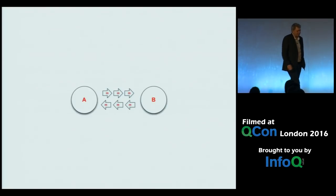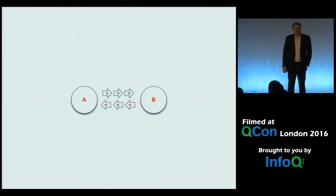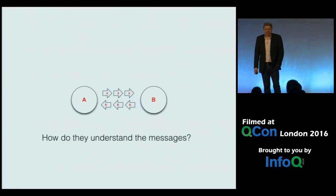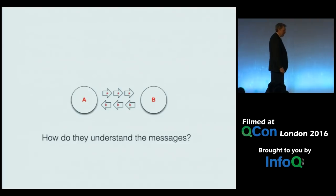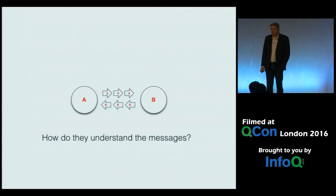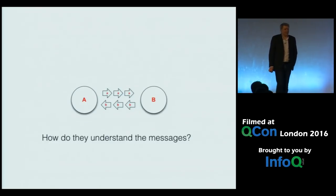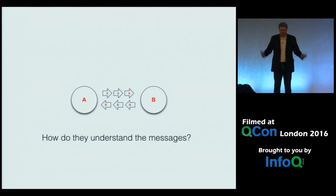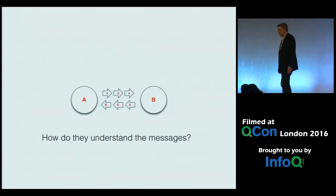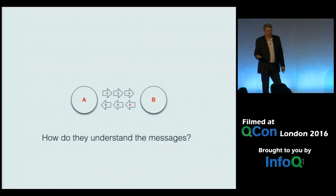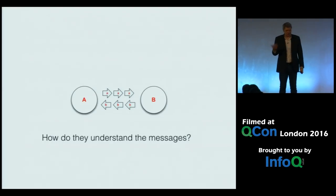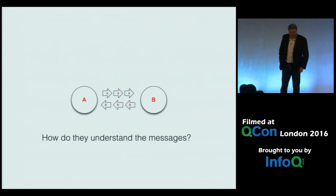A very simple microservice application might have a couple of microservices sending and consuming messages from each other. The question that arises for me — and it's a question I've asked ever since messaging really started — is: how do they understand these messages? If you're developing an application and publishing events in the form of messages, and over here someone is subscribing and trying to understand those messages, they must be in some language, some schema that both sides understand. So how does that happen?